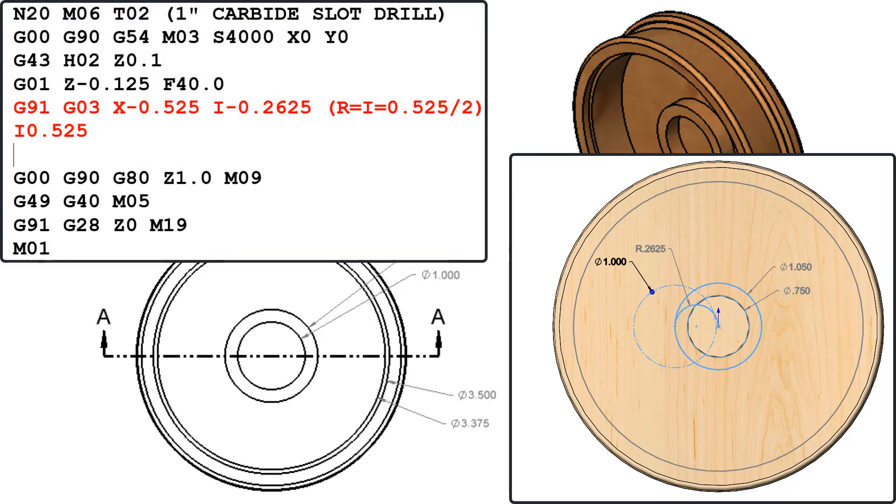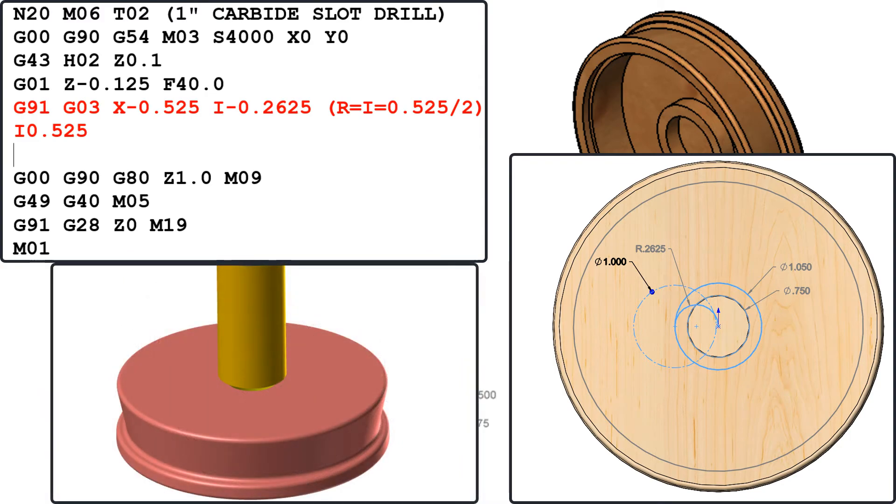To program this I'll code a counterclockwise arc incrementally which sweeps through 180 degrees. So I'll enter G91, G03, X-0.525 and I-0.2625 then I'll program a full circle by just programming the I 0.525.